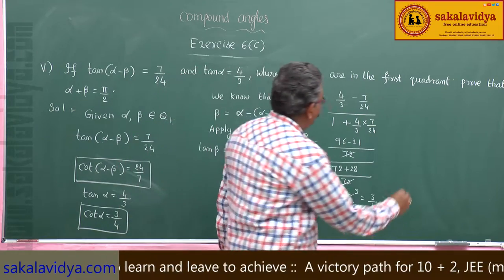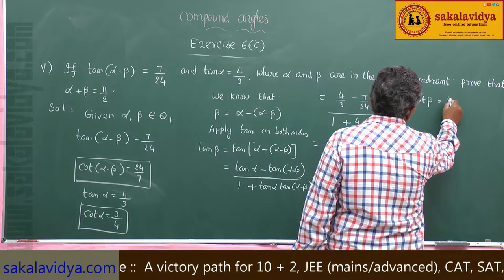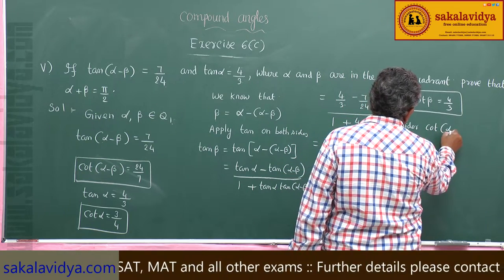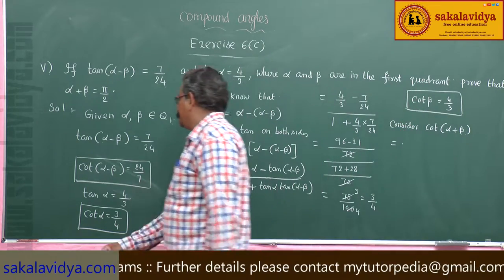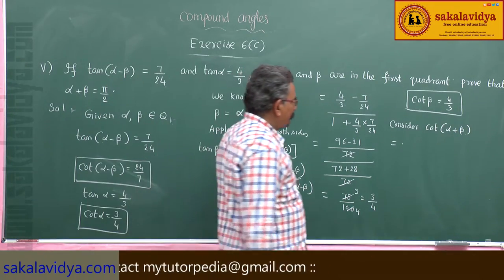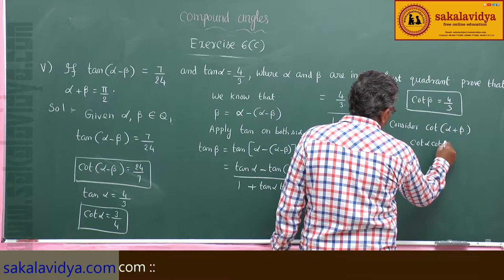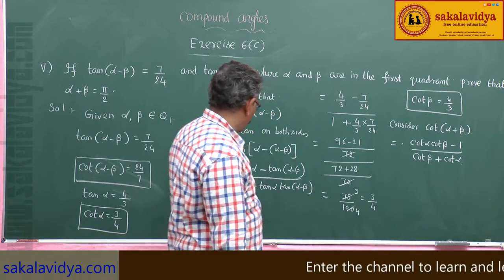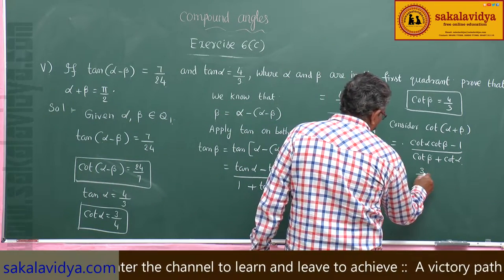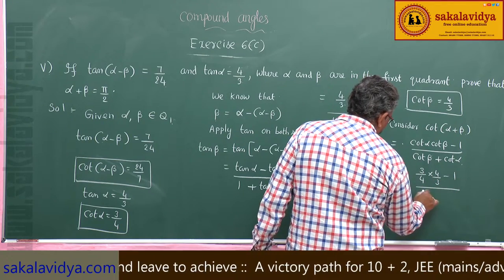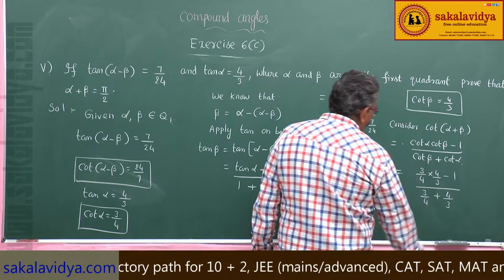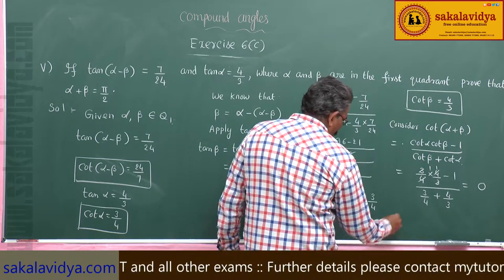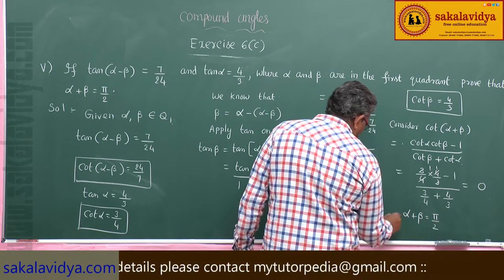Since tan β = 3/4, cot β = 4/3. Now consider cot(α + β) using the formula: cot(α + β) = (cot α · cot β - 1) / (cot β + cot α). Substituting: cot α = 3/4 and cot β = 4/3. The numerator becomes 3/4 × 4/3 - 1 = 1 - 1 = 0. So cot(α + β) = 0, hence α + β = π/2. Thus it is proved.